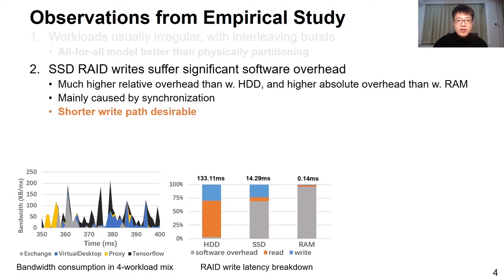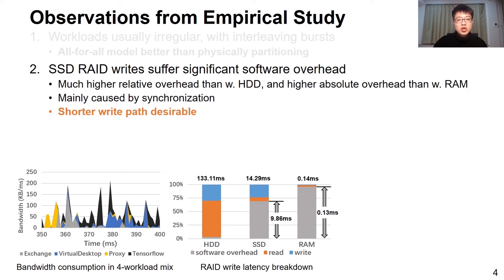Second, SSD read writes suffer large software overhead, as shown in the second figure, where we break down the read latency roughly into three parts: read I/O in blue, read I/O in orange, and software overhead in gray, for RAID-5 groups on HDD, SSD, and RAM disk. Hard disks are slow so software overhead is relatively small, while it dominates the total overhead for reads on RAM disk. With SSD reads, software overhead occupies 70% of the total latency, and the absolute value of such overhead is 75 times higher than with RAM disk, meaning it is not due to parity computation. We found much of the overhead comes from synchronization due to data dependency, so we seek a shorter read path.